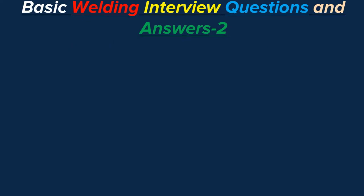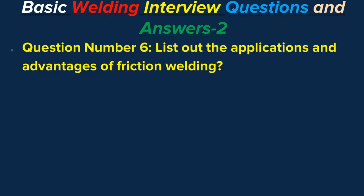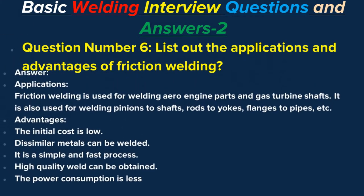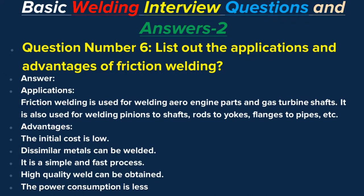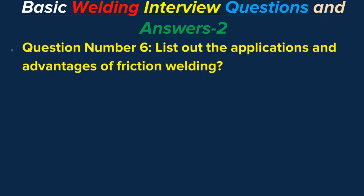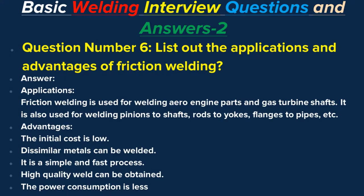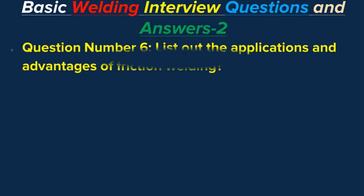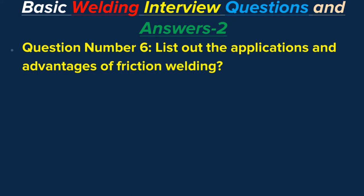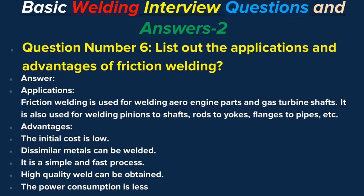Question number six: List out the applications and advantages of friction welding. Answer: Applications — friction welding is used for welding aero engine parts and gas turbine shafts, pinions to shafts, rods to yokes, flanges to pipes, etc. Advantages — the initial cost is low, dissimilar metals can be welded, it is a simple and fast process, and high quality welds can be obtained.